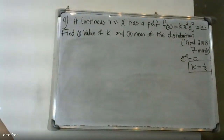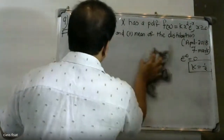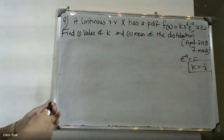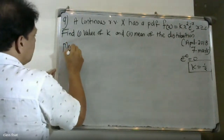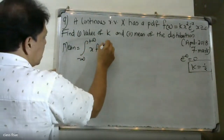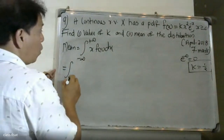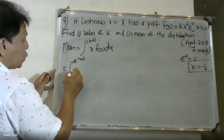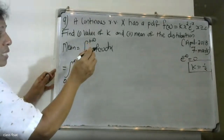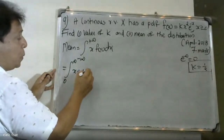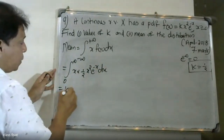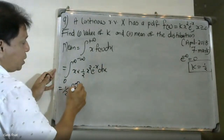Now for the mean of the distribution. The mean formula is: mean equals integral from minus infinity to plus infinity of x times f of x dx. With our limits from 0 to infinity, substituting f of x equals k x squared e raised to minus x, and k equals 1 by 2, we get the integral from 0 to infinity of x times x squared, which is x cubed, e raised to minus x dx times 1 by 2.